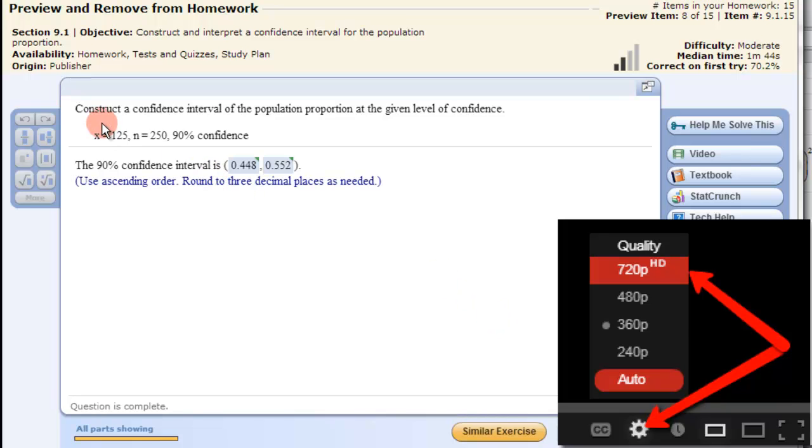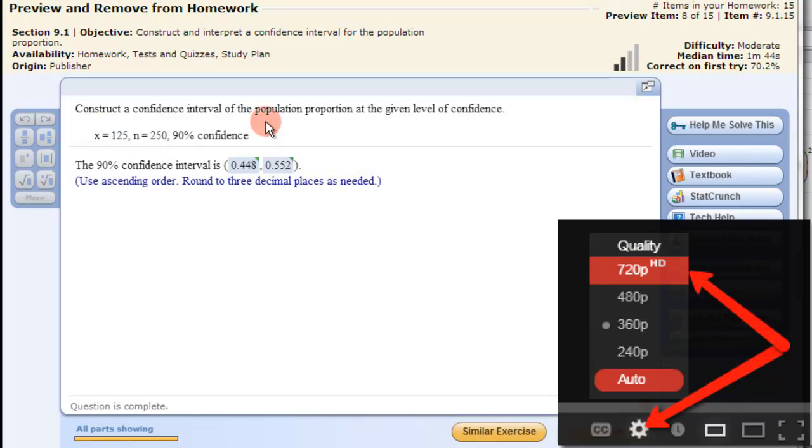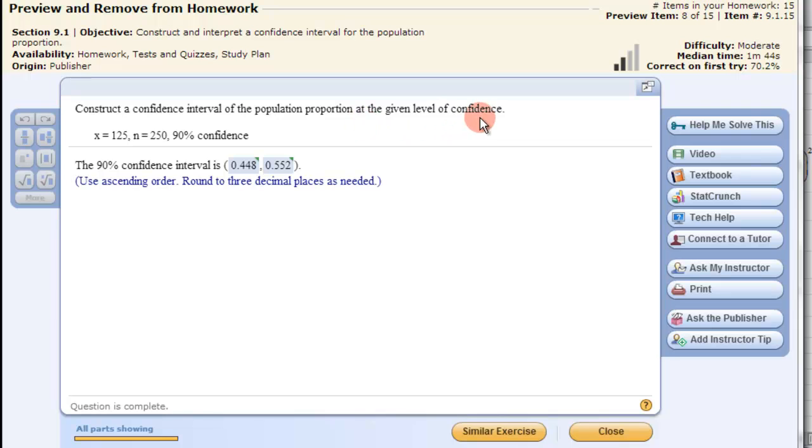In this example we're going to use Microsoft Excel to construct a confidence interval of the population proportion at the given level of confidence. Here we have this one at 90% and these are the answers. Let's see how we can do that.